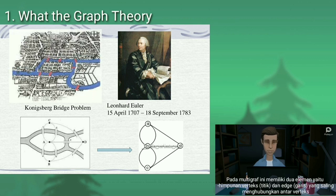The multigraph has two elements: set vertex or knot, and edge or line linking together through vertex.